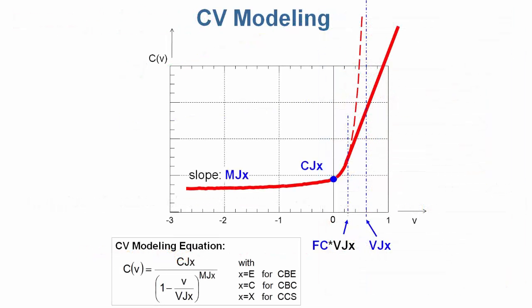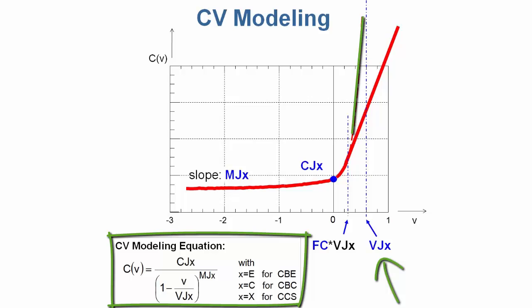Let's now begin with the CV modeling. For all three capacitances, the modeling equation is pretty much the same, with CJ the zero bias junction capacitance value, MJ the slope at negative DC bias, VJ the pole of the model equation where the capacitance would become infinite, FC the fraction of VJ for which the model applies a linear extension of the model equation to avoid the pole.